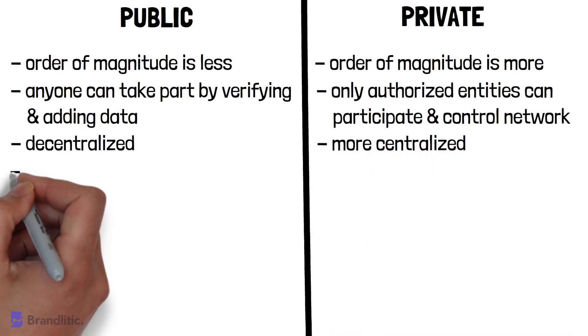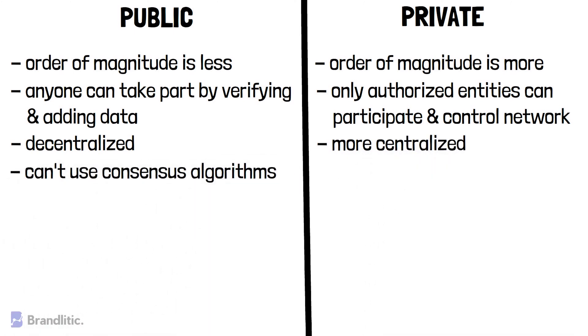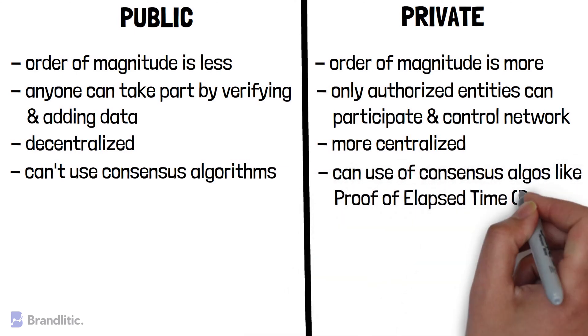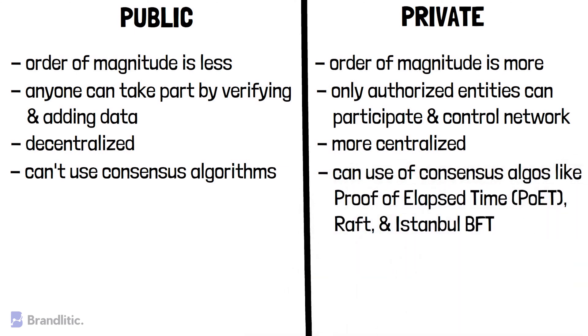Public blockchain can't make use of consensus algorithms, but private blockchain can use consensus algorithms such as Proof of Elapsed Time, RAFT, and Istanbul BFT.